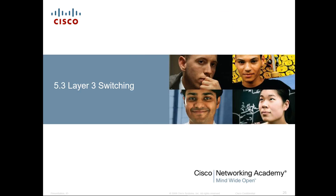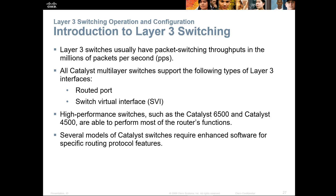Let's move on to Layer 3 switching. Layer 3 switches usually have packet switching throughput in the millions of packets per second (PPS). All Catalyst multi-layer switches support routed ports (Layer 3 ports), switched virtual interfaces (SVIs), and switch ports that mimic a Layer 2 port. Higher-level switches like the Catalyst 6500 series or 4500 series are all capable of acting like a Layer 3 device.